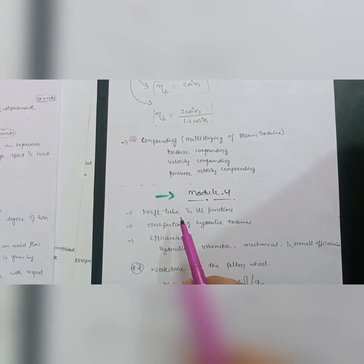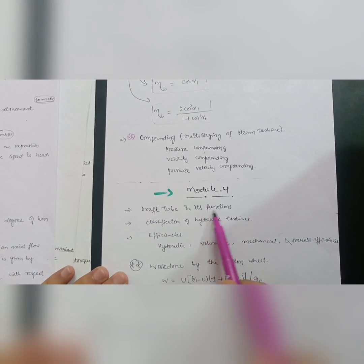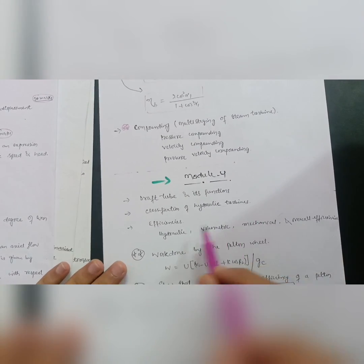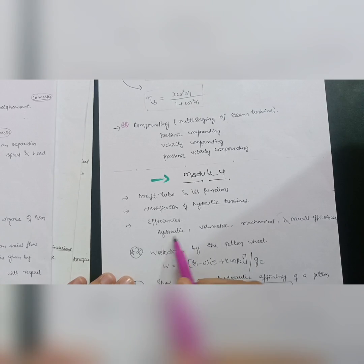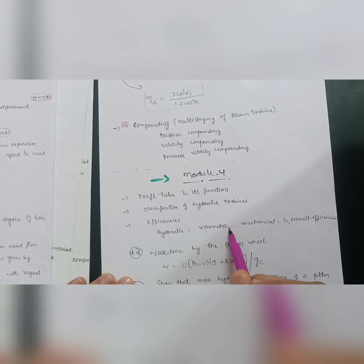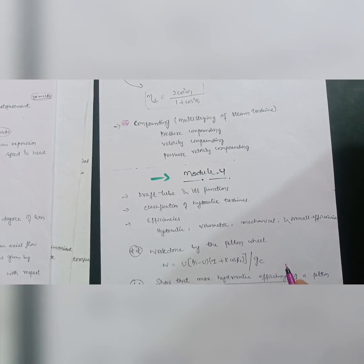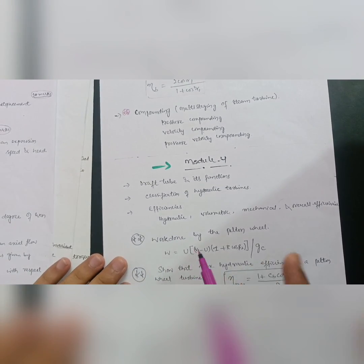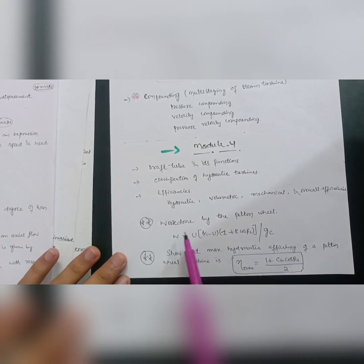In Module 4, focus on the theory part. They may ask: what is the draft tube and what are its functions and classifications? Also cover classifications of hydraulic turbines. Efficiencies will also appear here — hydraulic efficiency, volumetric efficiency, mechanical efficiency, and overall efficiency — so be prepared to write these.